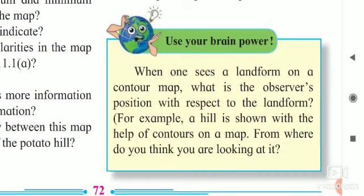Use your brain power. When one sees a landform on a contour map, what is observer's position with respect to the landform? जब तुम किसी भूरूप को समोच्च रेखाओं के आधार पर देखते हो, तब उस भूरूप को तुम कहां से देखते हो? For example, a hill is shown with the help of contours on a map, from where do you think you are looking at it? map में समोच्च रेखा की सहायता से एक टीला दिखाया गया, तो इस टीले की ओर तुम कहां से देख रहे हो?